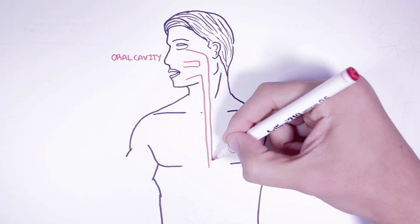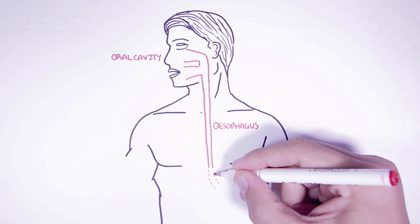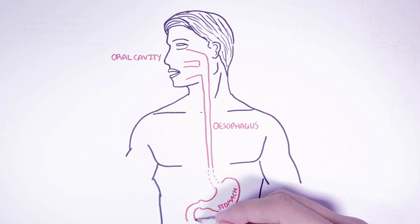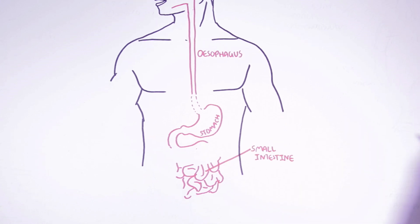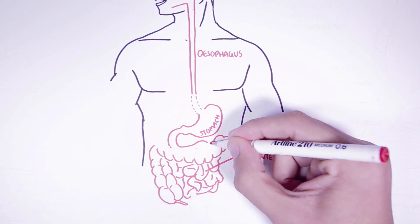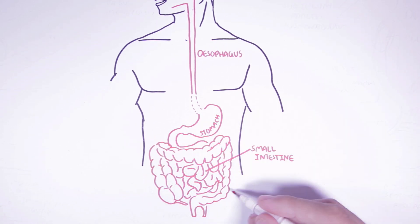The digestive tract consists of the mouth, esophagus, stomach, small intestine, large intestine, also known as the colon, and the rectum.